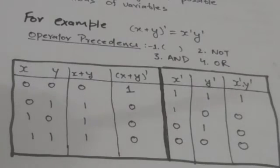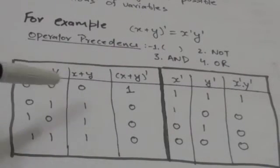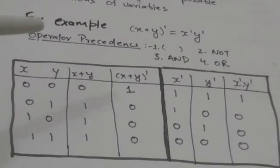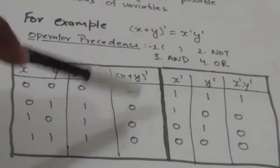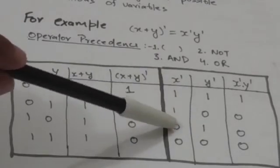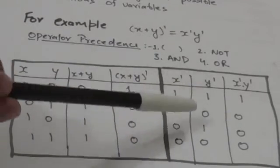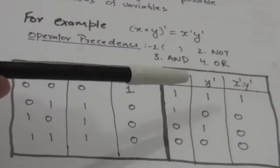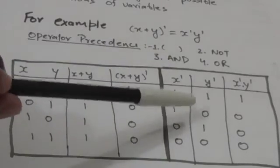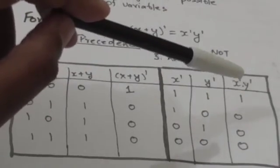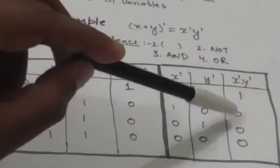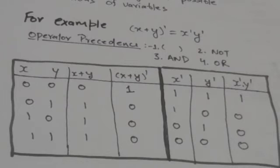Now when X is 1 and Y is 0, then X OR Y will be 1 and the complement of X OR Y will be 0. X complement, that is X naught, will be 0; Y complement, that is Y naught, will be 1; and X naught AND Y naught will be 0. Here again the value of both sides is the same for this combination of values of X and Y.